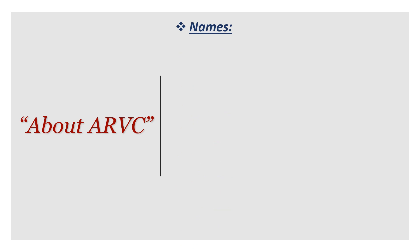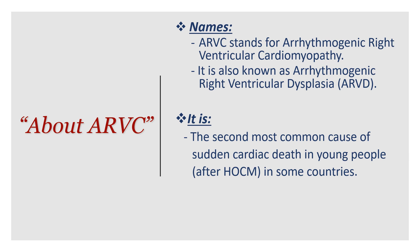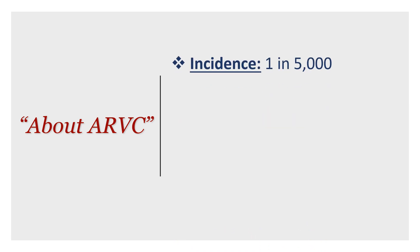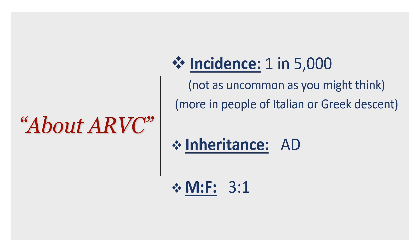ARVC stands for arrhythmogenic right ventricular cardiomyopathy, also known as ARVD. It is the second most common cause of sudden cardiac death in young people after hypertrophic obstructive cardiomyopathy in some countries, causing up to 20% of sudden deaths in people under 35. The incidence is 1 in 5,000 in the general population. It's more common in people of Italian and Greek descent. The inheritance is autosomal dominant, so family screening is required, and the male to female ratio is 3:1.